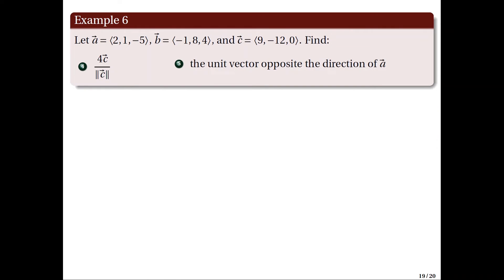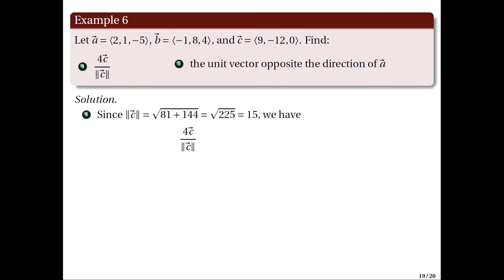For item 4, we find 4C divided by the magnitude of C. Since |C| = √(81 + 144) = √225 = 15, we have (4/15) · (9, −12, 0). Multiplying the scalar to each component and simplifying gives the resulting vector (12/5, −16/5, 0).